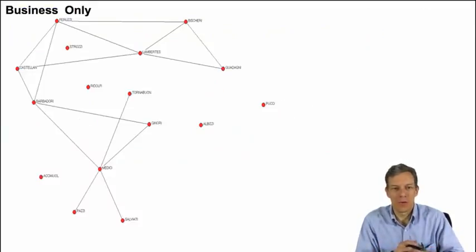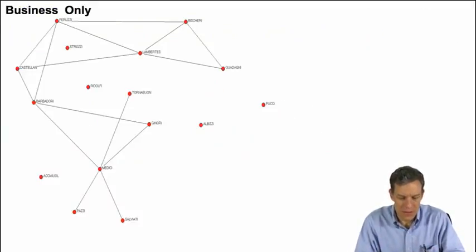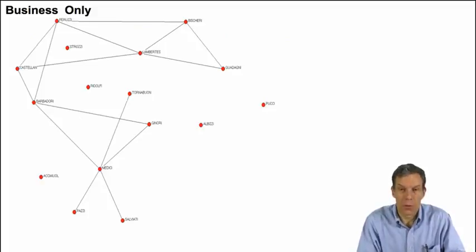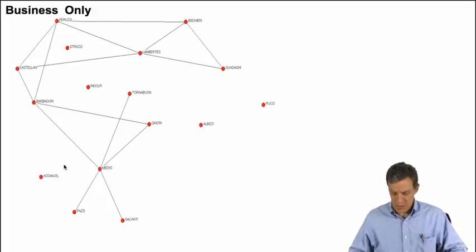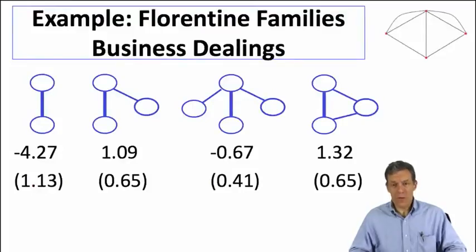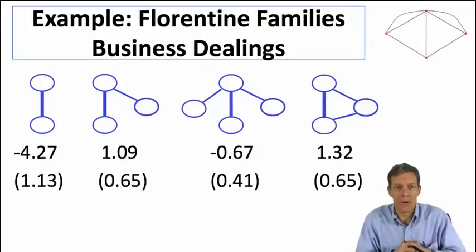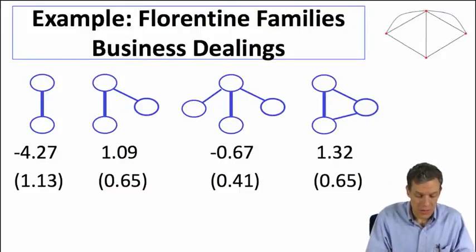Remember, this is what the network looks like. This is the business-only dealings in that network, so it's a sparser network. In fact, there's a bunch of disconnected families in this particular situation. And if you go through, these are the estimates that they got in that paper.